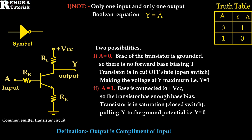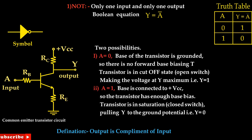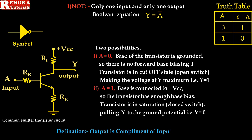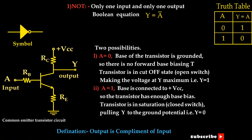Since there is one input, there will be only two possibilities. In the diagram, you can see a transistor connected in common emitter configuration. A resistor RC is connected with the positive power supply and a resistor RB is connected at the base of the transistor. In a common emitter amplifier, if the base voltage is high enough to forward bias the diode between base and emitter, the transistor will be turned ON. If the voltage across the base is 0, then the transistor will be OFF.